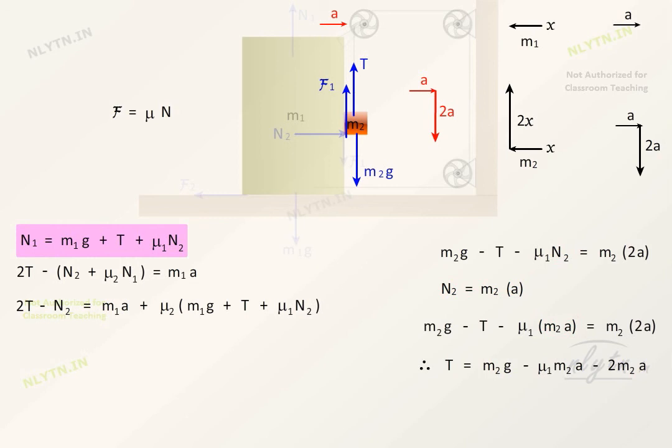Substituting N1 from this equation into this, we get 2T minus N2 minus μ2(m1g plus T plus μ1N2) is equal to m1 into a. Substituting the values of N2 and T from these equations and solving,